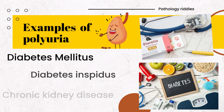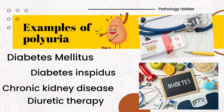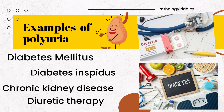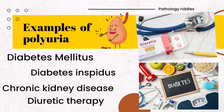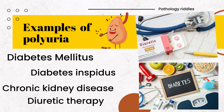What are the examples of polyuria? You can see polyuria in diabetes mellitus, diabetes insipidus, chronic kidney disease and diuretic therapy.